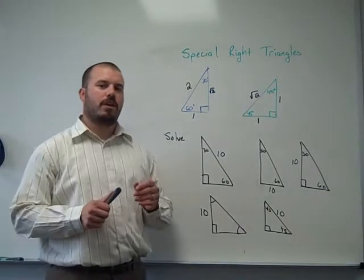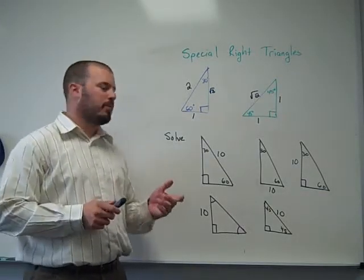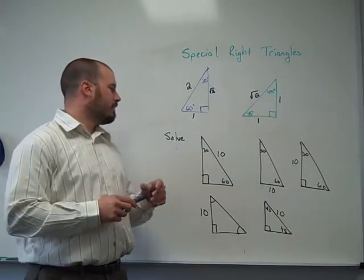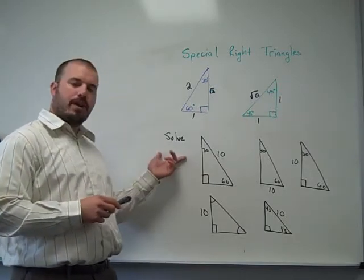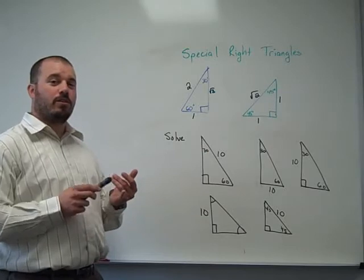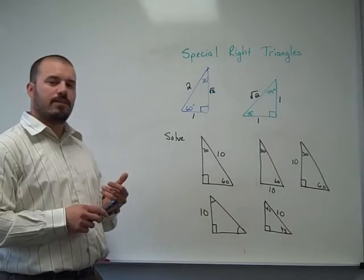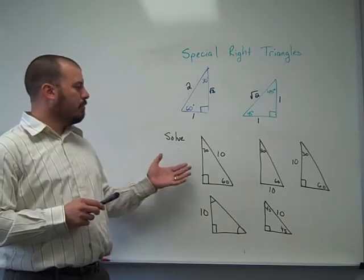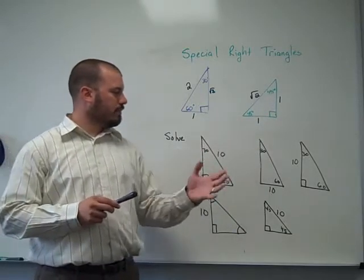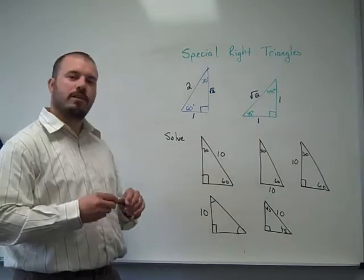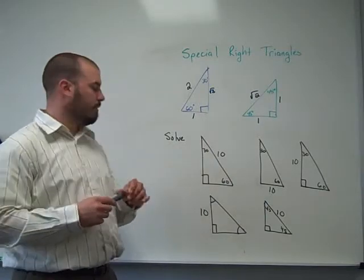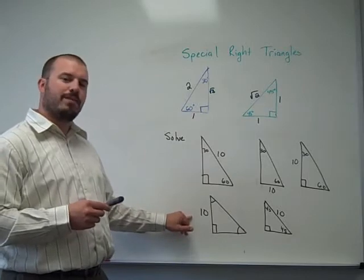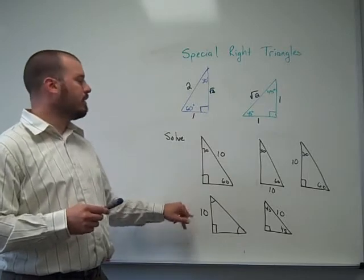In this video, we're going to solve some specific problems using special right triangles. To solve a triangle means to find all of the side lengths and all of the angle measures. The angle measures are mostly taken care of because we're dealing with 30-60-90 triangles and 45-45-90 triangles.